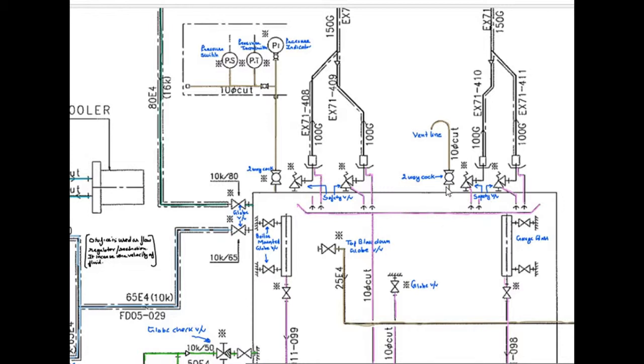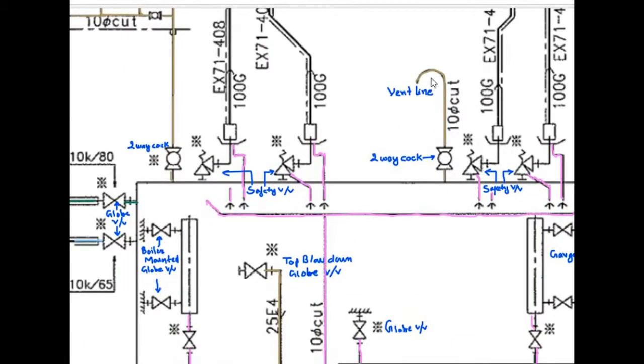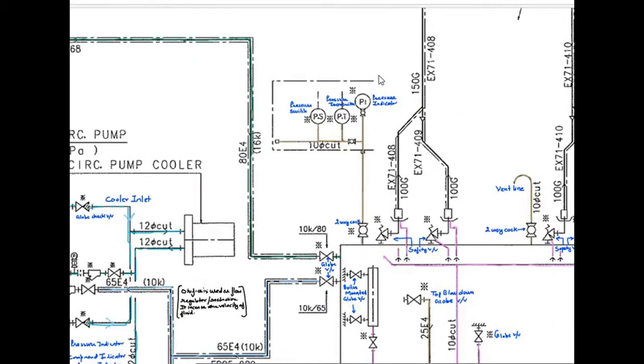For vent, you can see, two-way cock is present. This is a symbol of two-way cock. And vent is present on the boiler. The other line with two-way cock going to pressure indicator, pressure transmitter PT and pressure switch PS.